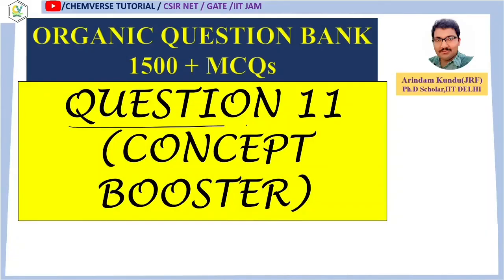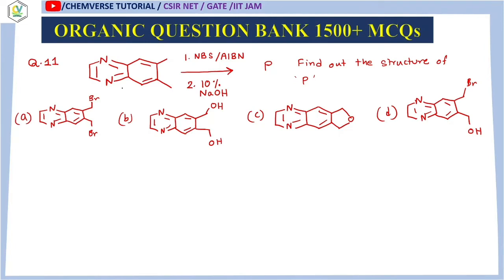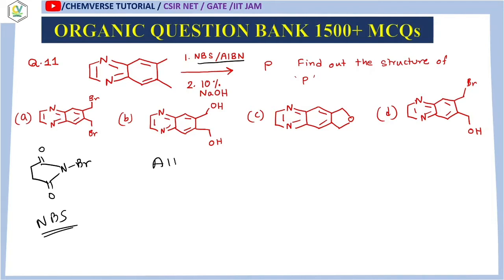Without further ado, let's get started. Question number 11 is a special concept booster question. The question says: if this starting material is treated with NBS and AIBN in the first step, and 10% NaOH in the second step, what will be the structure of the product? Now, NBS is N-bromosuccinimide — it has a specific structure — and AIBN also has its own structure.